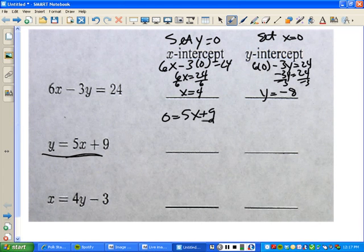You'll subtract 9, subtract 9. You'll get negative 9 equals 5x. Divide by 5, divide by 5. X is equal to negative 9 fifths.